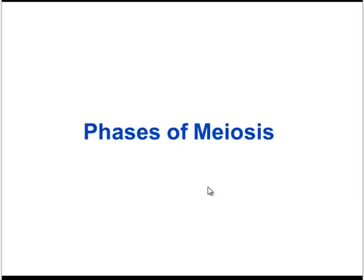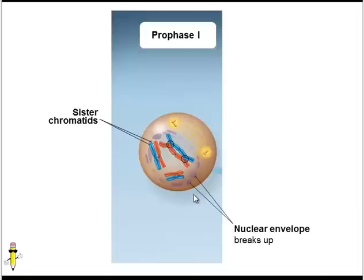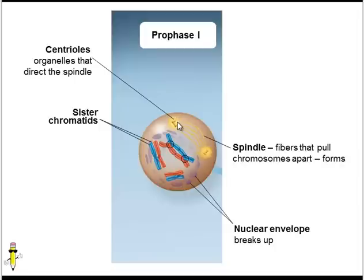Now we're going to take a closer look at some events that happen during meiosis. It's not necessary to memorize every single phase and every single event, but there are some key processes that occur. The very first phase of meiosis is called prophase I because it happens during meiosis I. Here are the sister chromatids from our duplicated chromosomes. During prophase I, the nuclear envelope is disappearing. Meanwhile, the spindle is forming — the spindle consists of fibers that are going to attach to the chromosomes and pull them apart. You can also see centrioles, which are organelles that organize and direct the spindle.